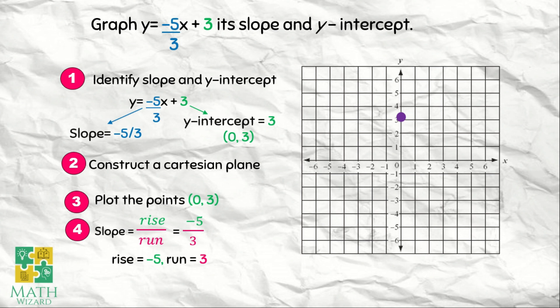Take note that yung rise natin ay negative 5. If it's a negative, meaning yung movement natin is up or down? Yung movement natin is going down because it's a negative. How many? 5. So we have 1, 2, 3, 4, and 5. And then yung run natin to the right is 3. 1, 2, 3, and we have this point.